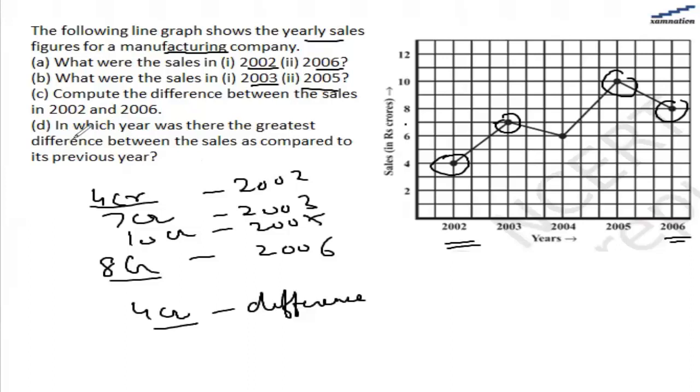And then, in which year was the greatest difference between the sale as compared to the previous year? So we need to find out which year the sale difference is higher. From 2002 to 2003, the sale difference was 3.